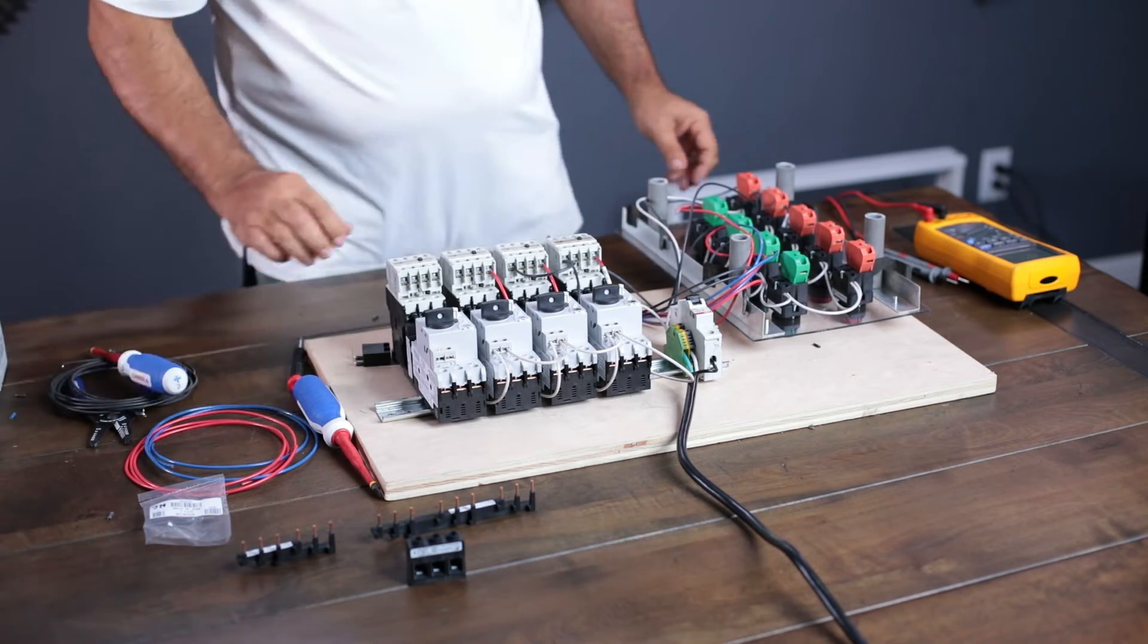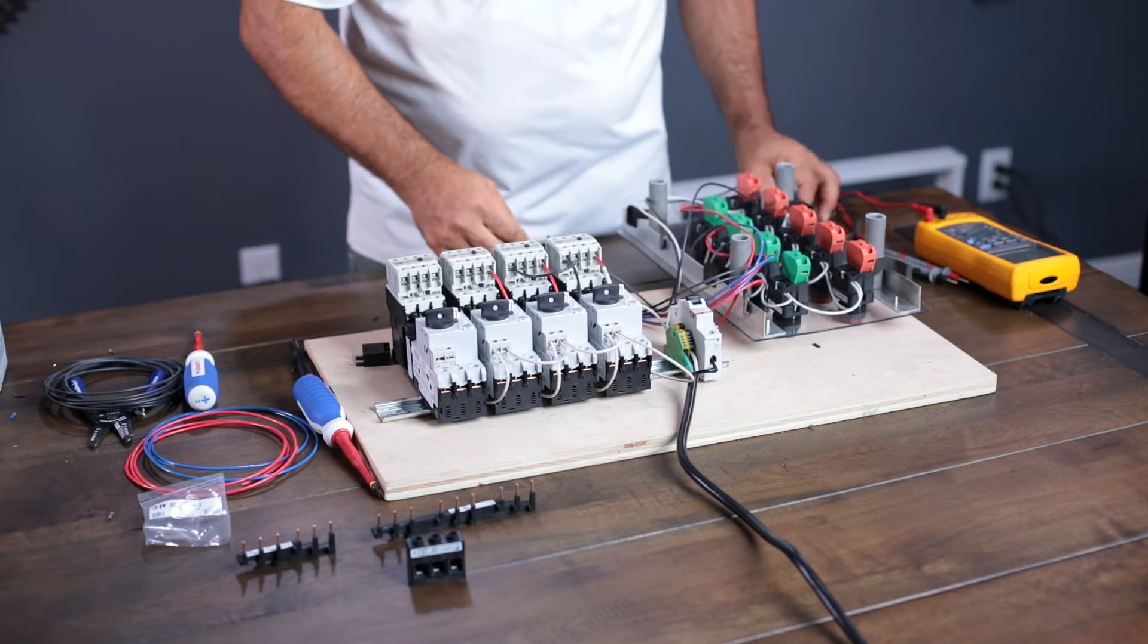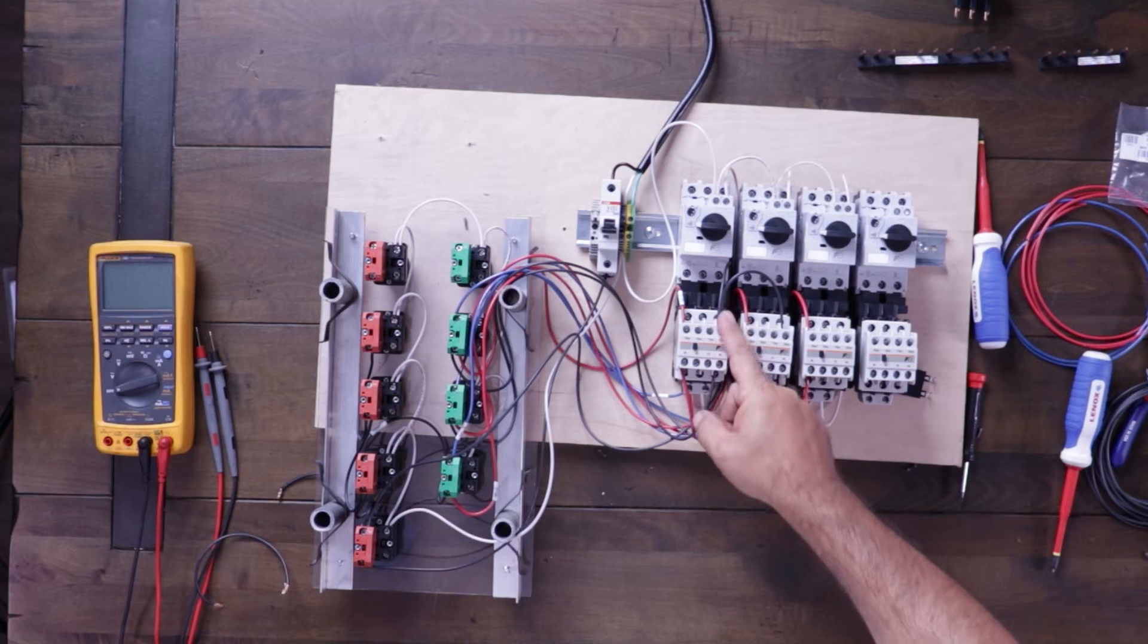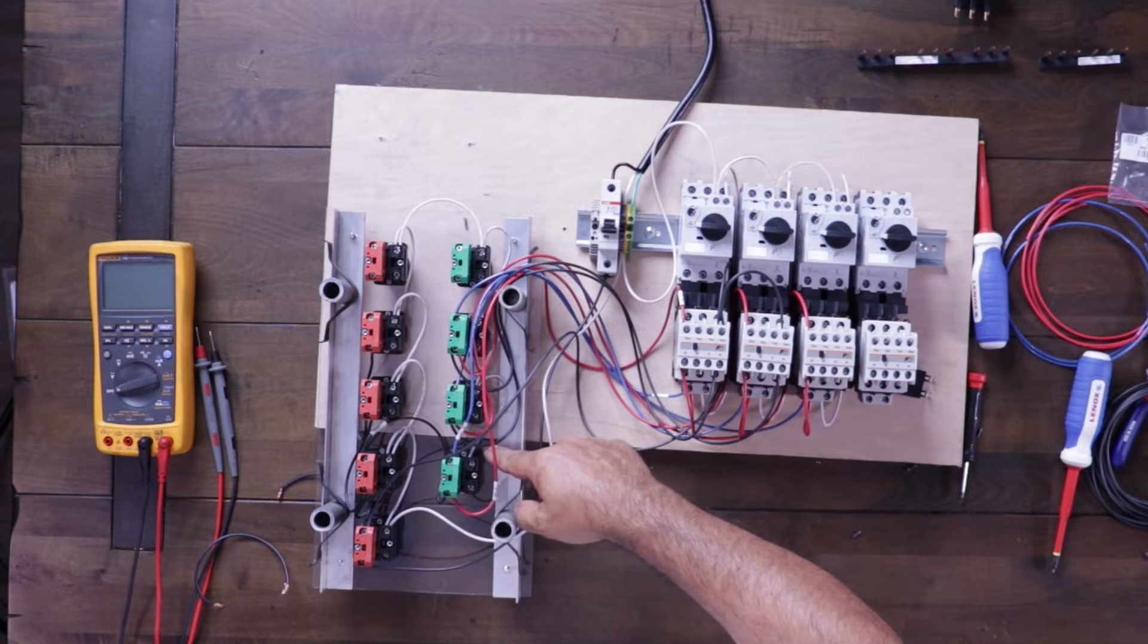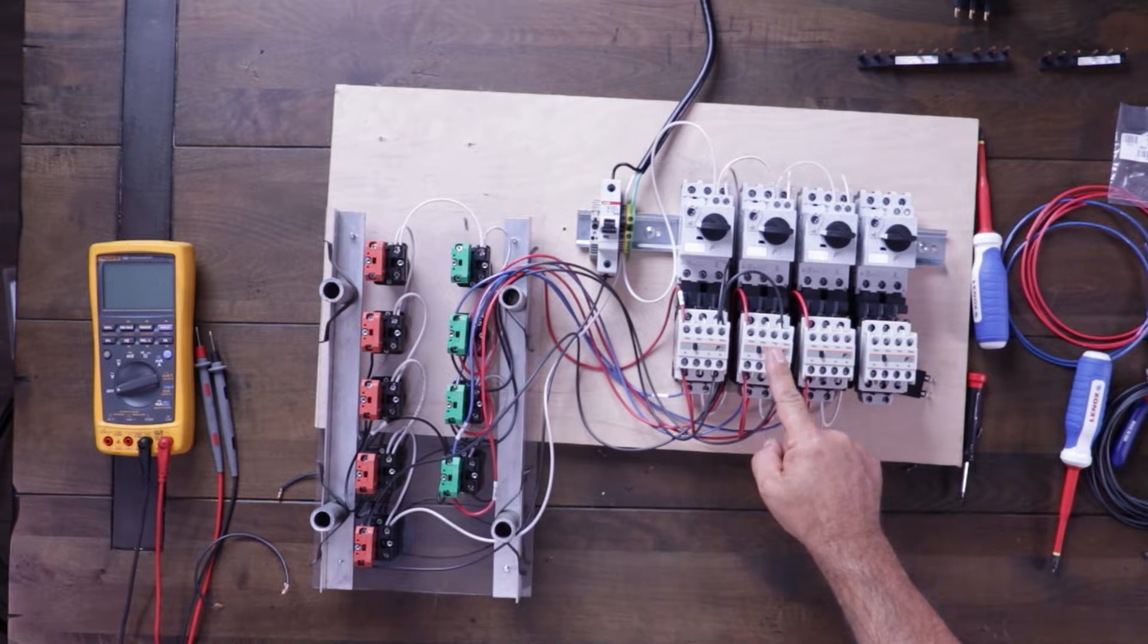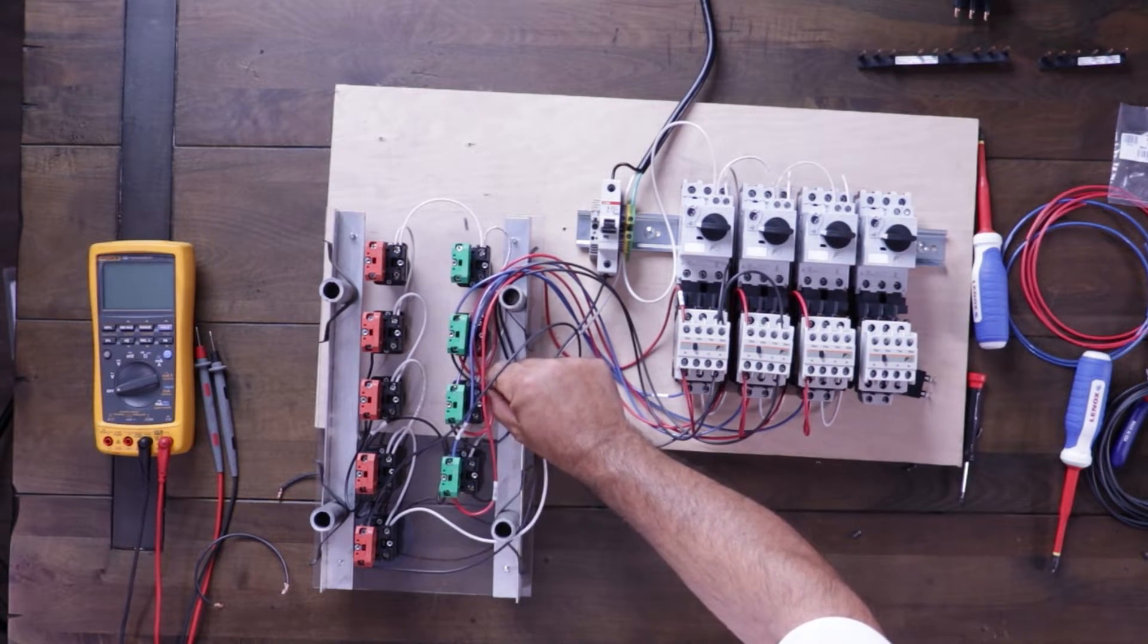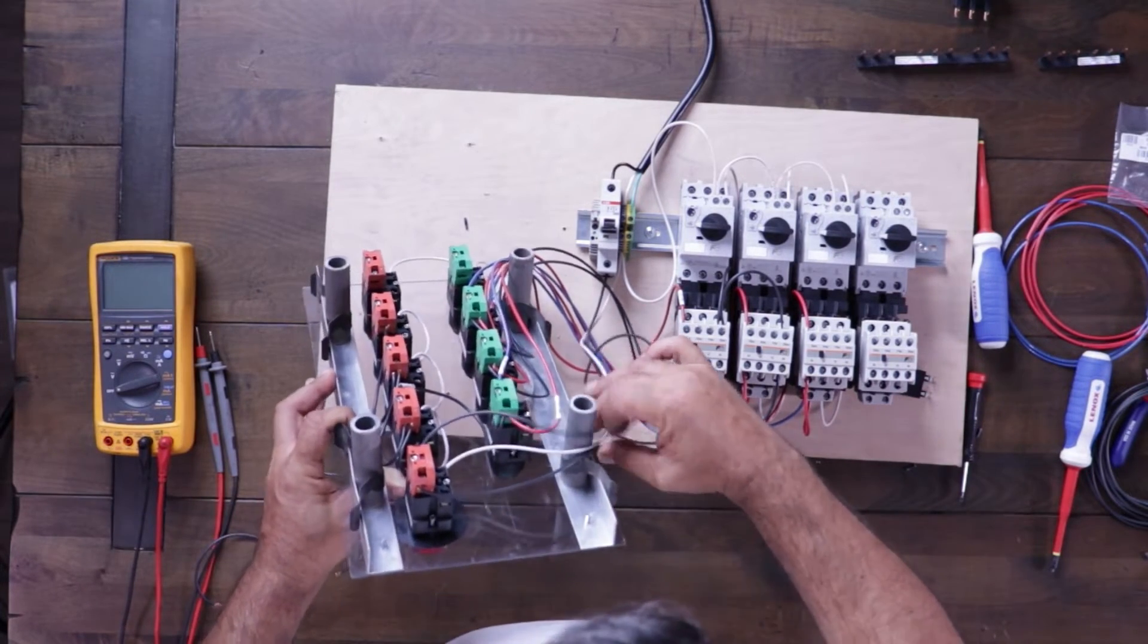Alright, so when the top side always has power, if our e-stop isn't pushed, when motor starter number one comes on, it will feed power to the start button on motor starter number two. When the motor starter number two is on, it will feed power to our start button from motor starter number three, and it will allow those to operate in sequence. Let's flip this over.